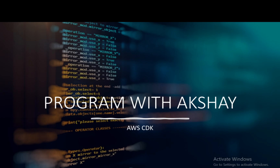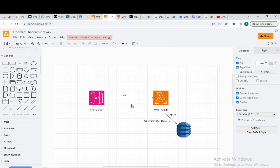So let's start. To begin with, in the previous lecture we created an API Gateway and AWS Lambda. Now what we are going to do is create a DynamoDB table and do CRUD operations like get, put, post, and delete.